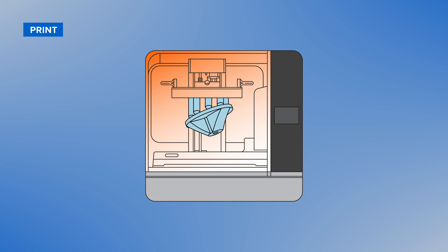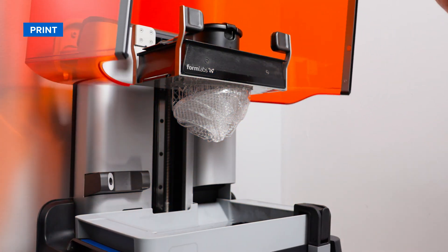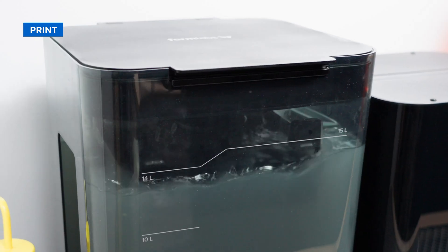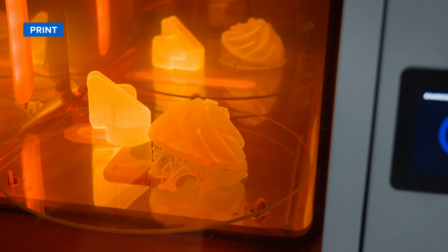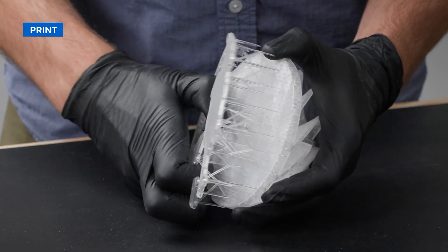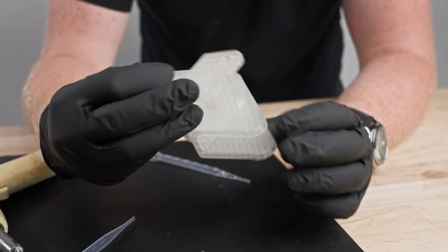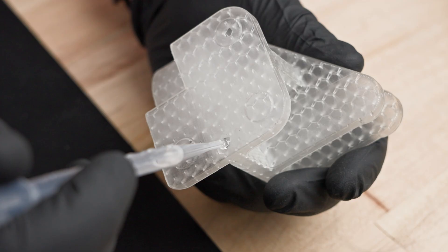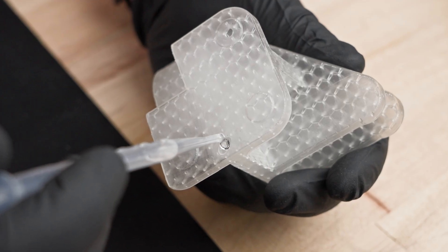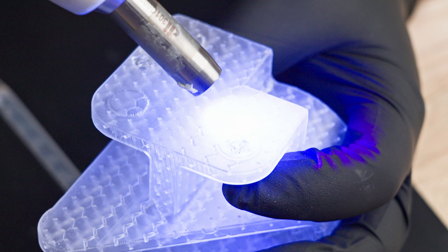After printing the part on a Formlabs SLA printer with Clear Cast resin, wash and post-cure the parts and remove any support material from the pattern. Once all of the resin is out of the pattern, patch over any holes with wax or Clear Cast resin using a UV pen.